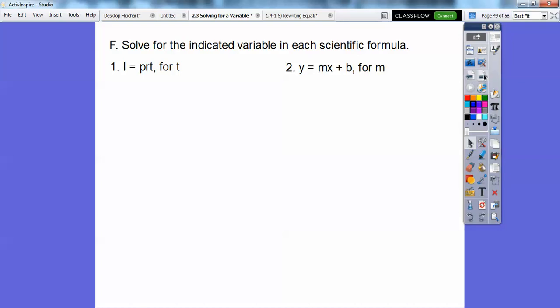All right, let's try a couple of these. Solve for the indicated variable in each scientific formula. This one's an interest rate at banks. Interest rate equals PRT. That's the principle, the rate, and the time. We're solving this one for T. So we're going to divide both sides by PR, and that'll be your answer. I over PR equals T.